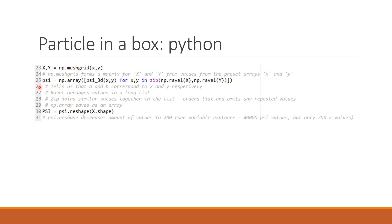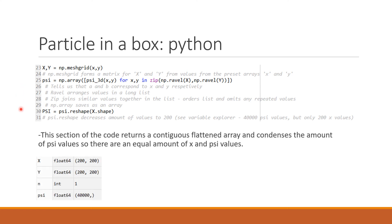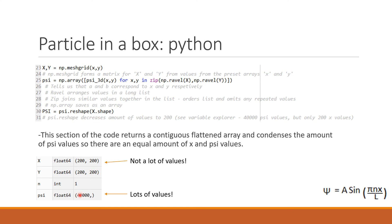The only problem we now have is that we have 40,000 values of psi but only 200 values of x, so this clearly isn't going to work. We have to use the psi.reshape function, which simply reshapes psi into the x shape. Our 40,000 values will be condensed down to 200 values without losing any integral data, which is quite handy.